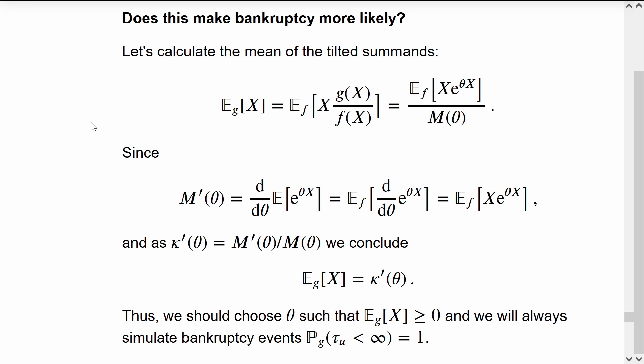We should choose the exponential tilting parameter theta so that in the new distribution the X's have a non-negative mean. In that scenario, the running sum will trend upwards.